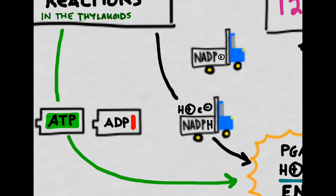After ATP has lost its phosphate molecule, it becomes ADP, the lower energy form, and must return to the light-dependent reactions to be recharged.